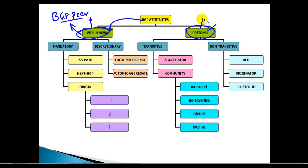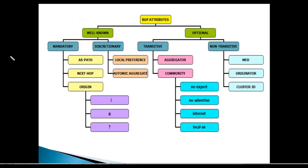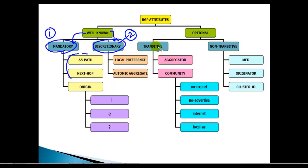When we say optional, it may or may not be present in the BGP update. These two categories are further classified: well-known is divided into well-known mandatory and well-known discretionary. Optional is divided into optional transitive and optional non-transitive. We will be discussing each of these attributes individually, but first we will understand the categories, and then in the next video we will cover each attribute one by one — starting with AS path, next hop, and origin, then local preference, weight, and other attributes.